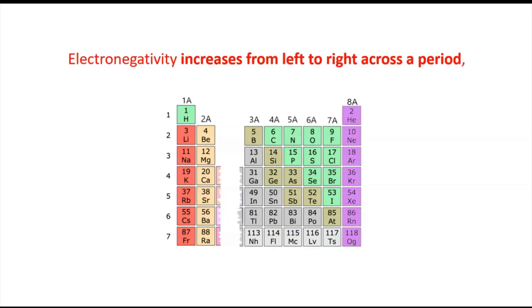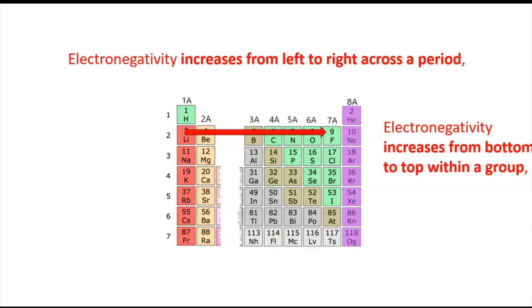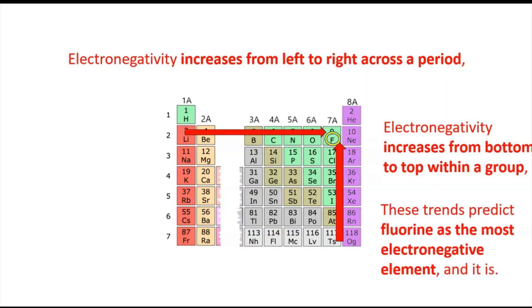The trends in electronegativity are that it increases from left to right across a period and also from bottom to top within a group. So it ends up pointing to fluorine, which is the most electronegative element. So we can use these trends to make predictions about the polarity of bonds and the polarity of some molecules.